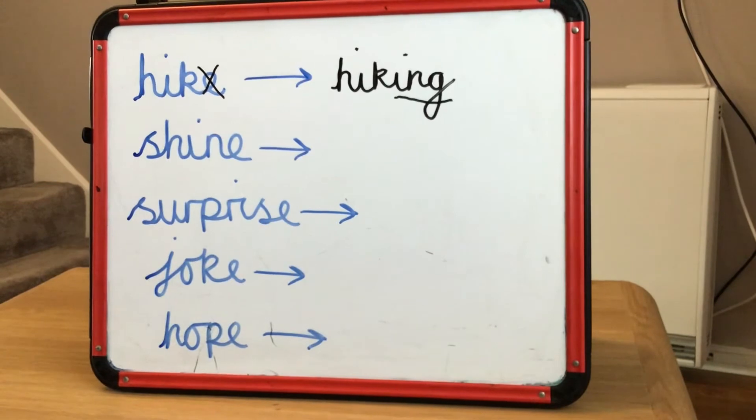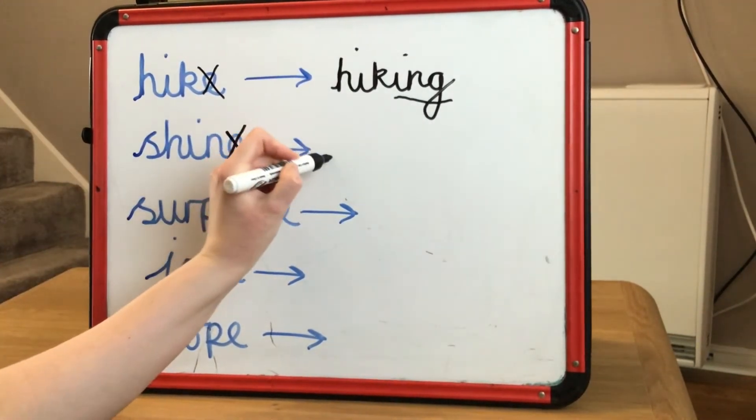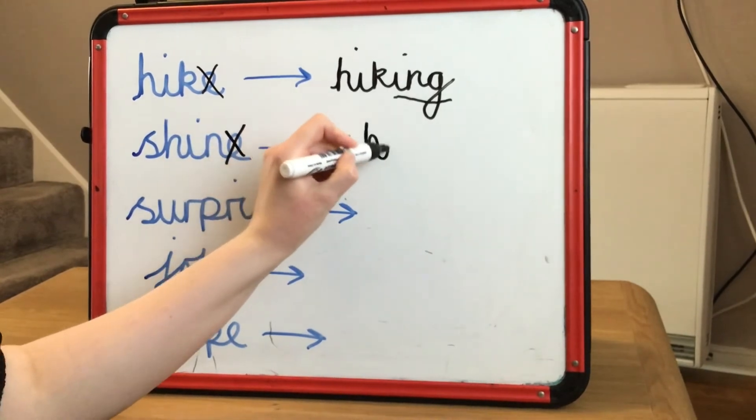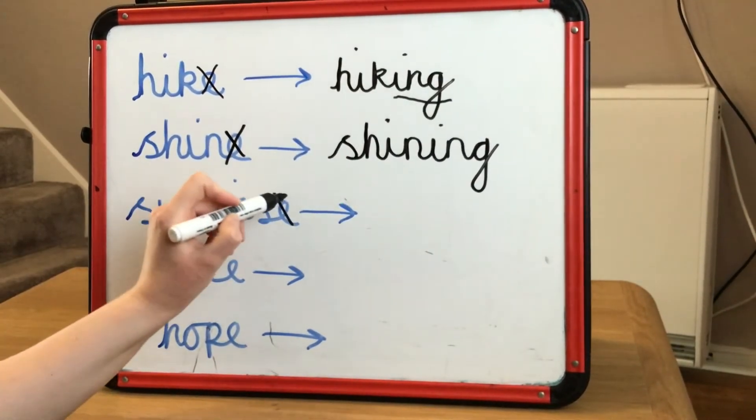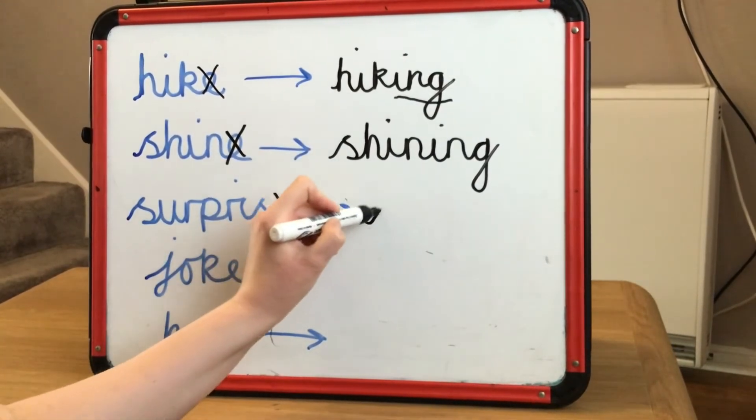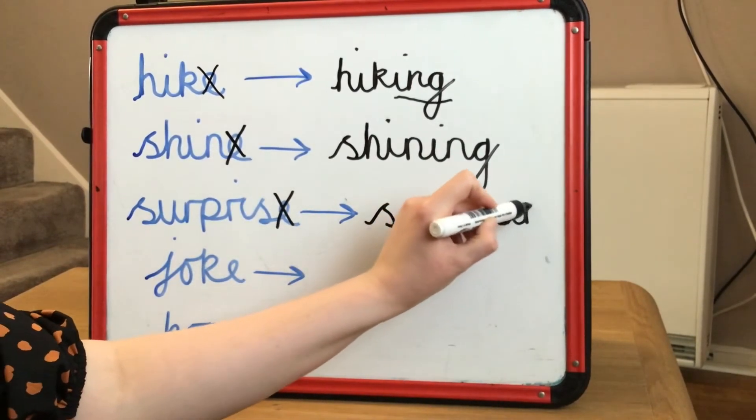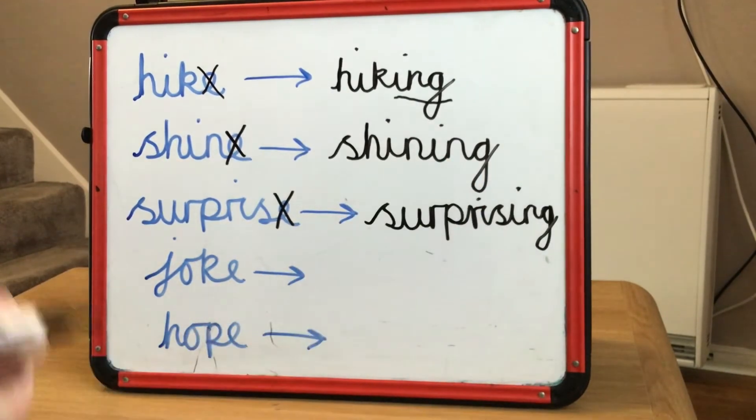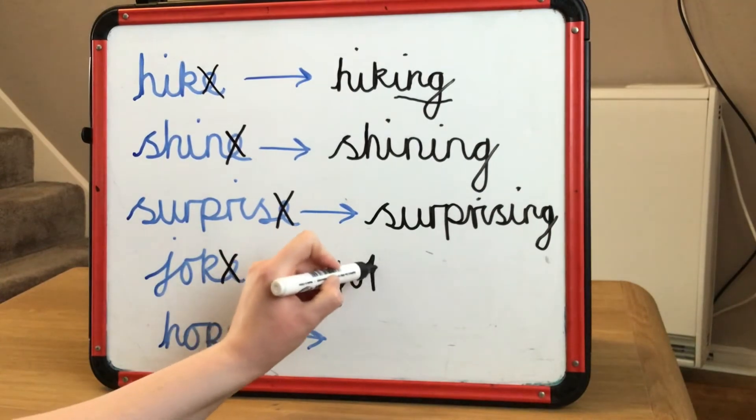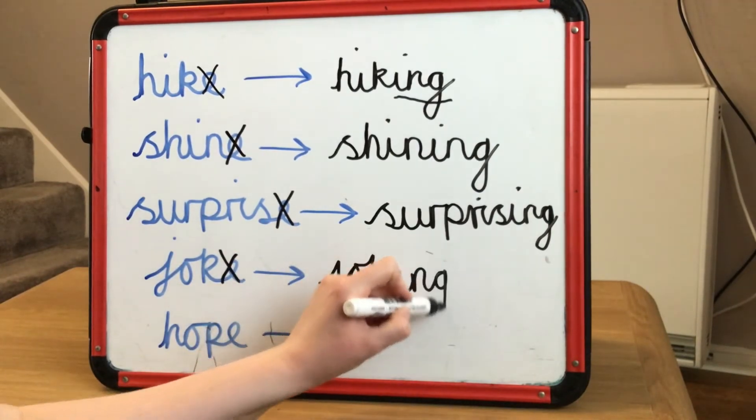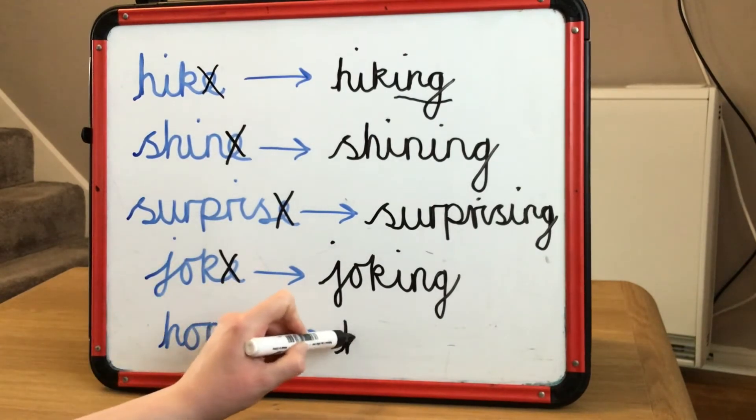To add the suffix '-ing' to shine, we need to cross out the e and we write it as shining. Surprise, don't need the e, it's going to become surprising. Joke, don't need the e, it's going to become joking. And hope, cross out the e, it's going to become hoping.